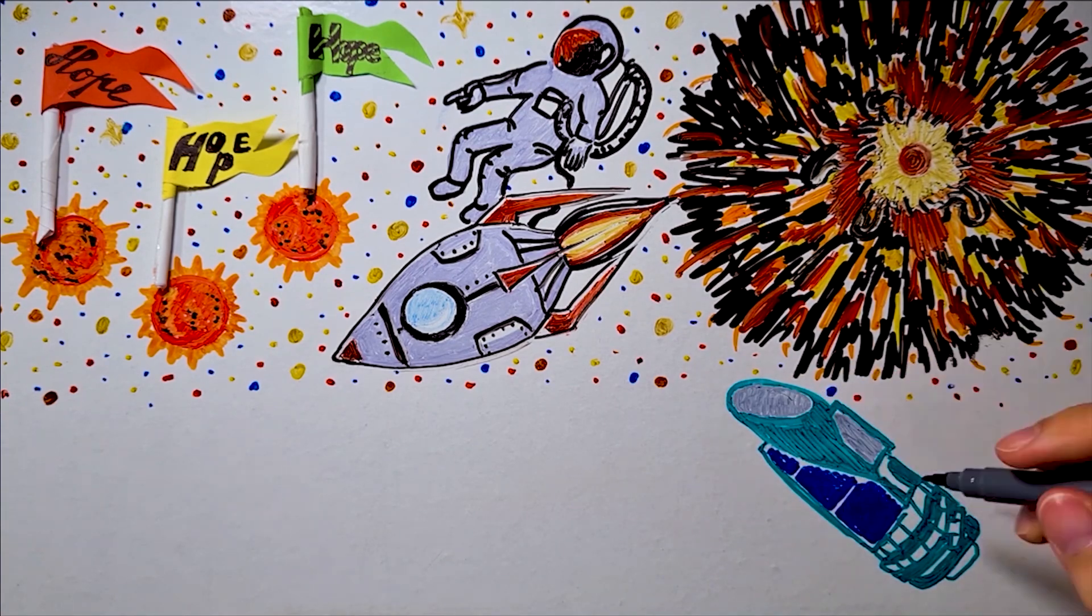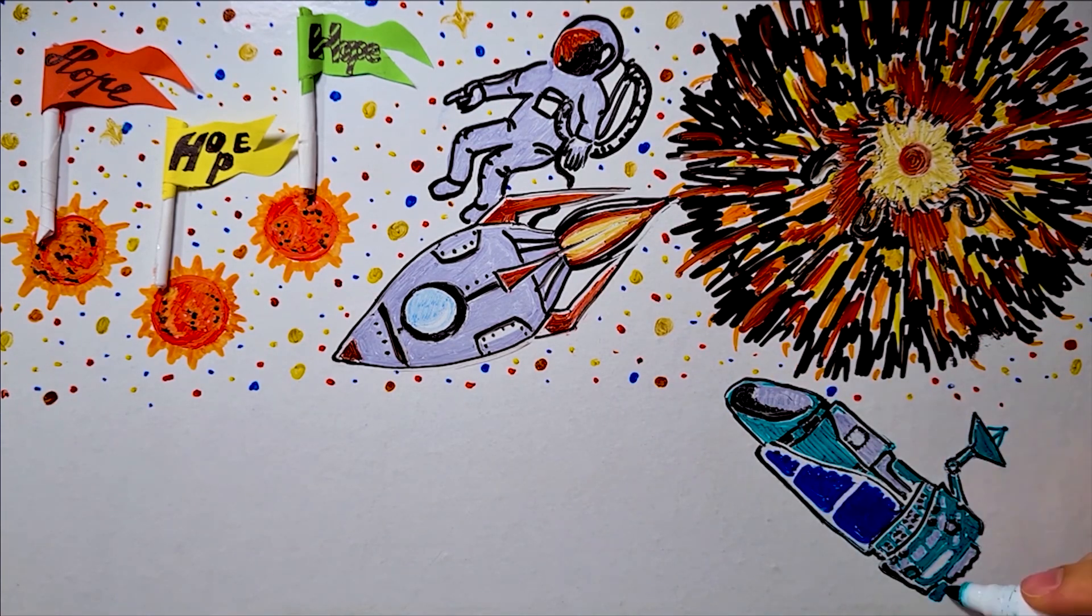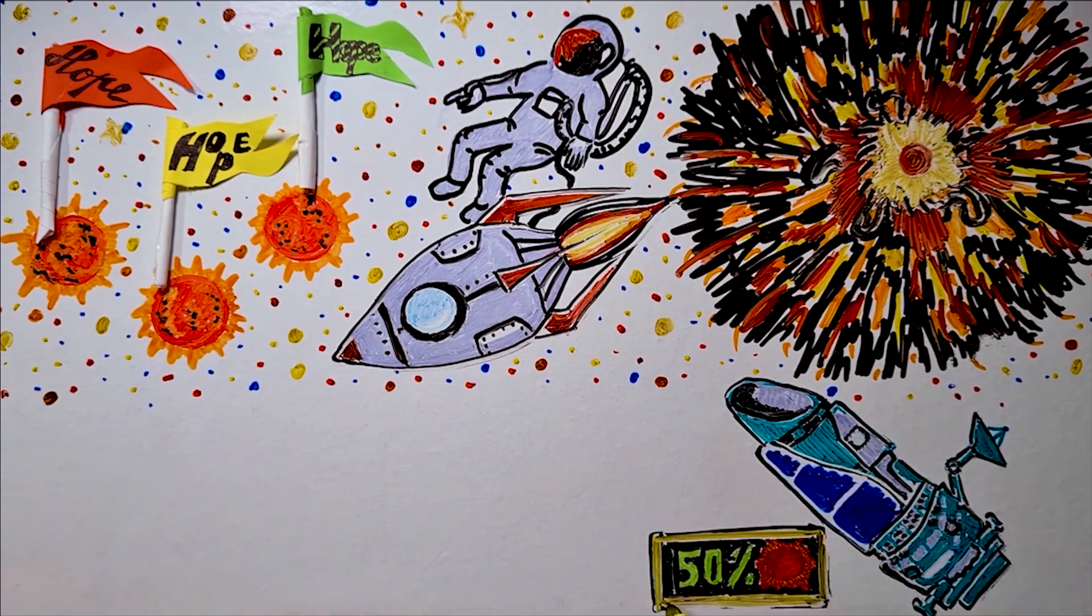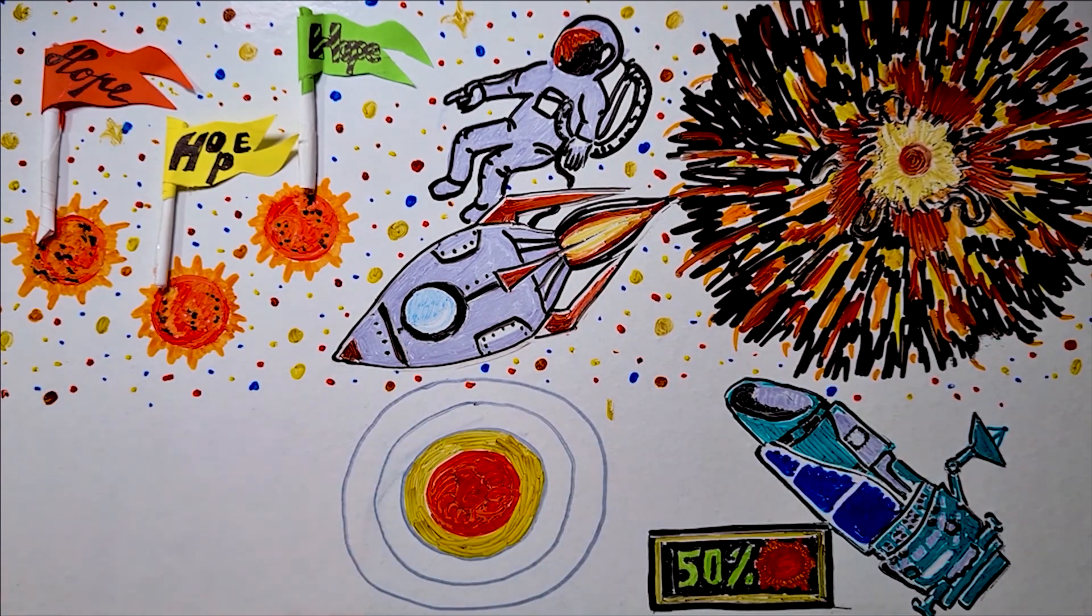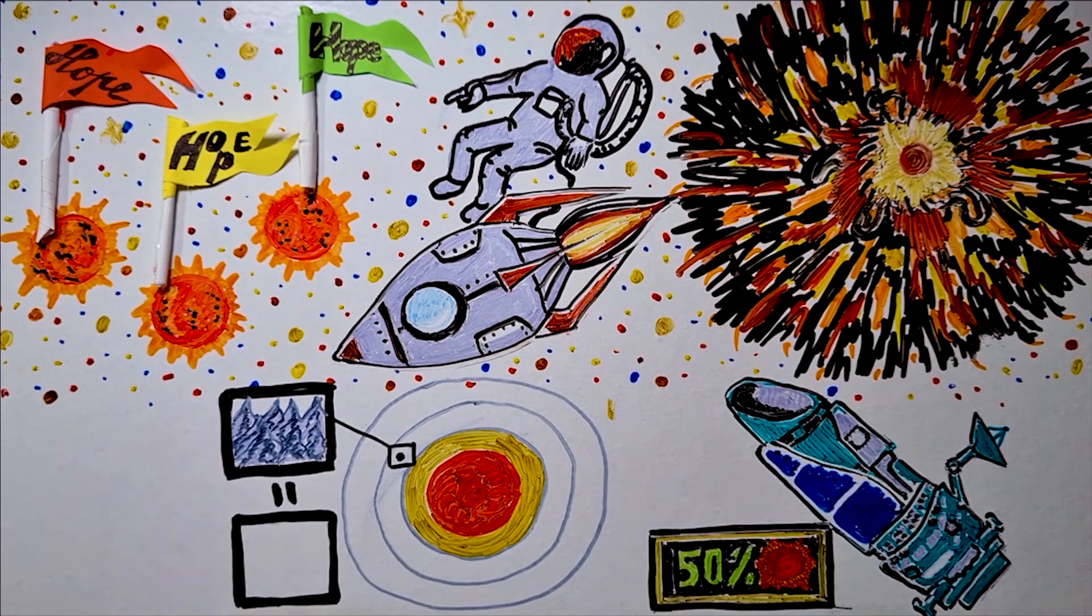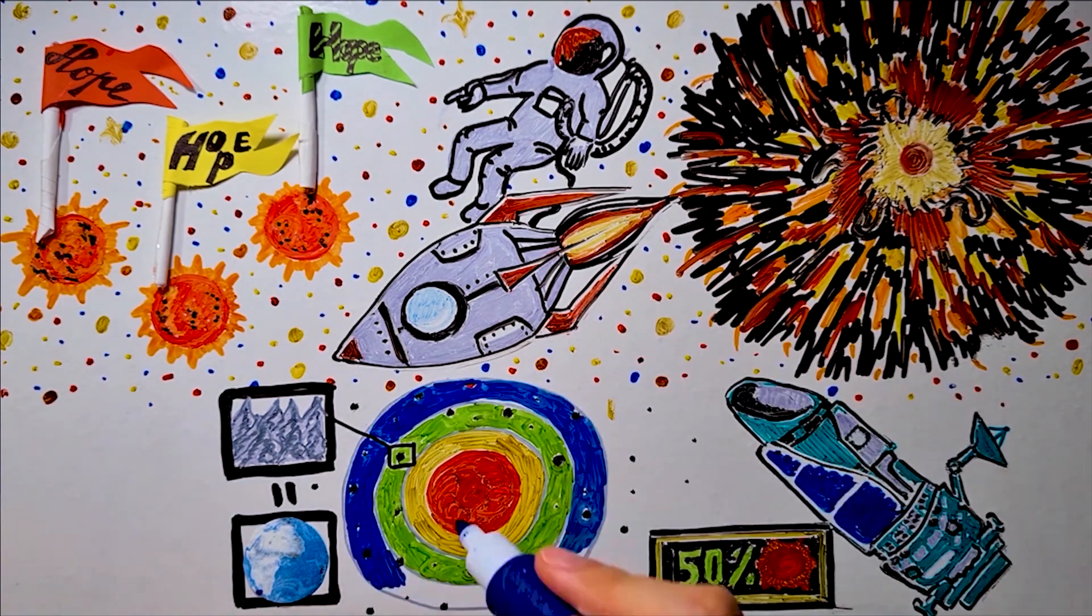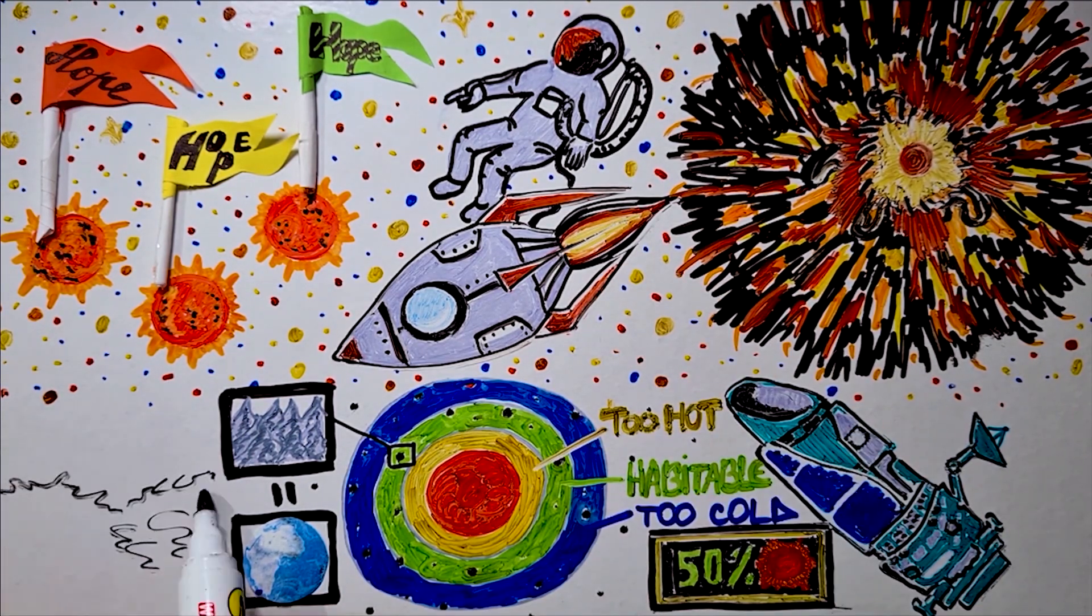According to the Kepler space observatory, at least 50% of all red dwarfs host rocky planets around the size of our earth. Many of them are located in the habitable zone. Meaning the planet's temperature is just right to hold liquid water and sustain life.